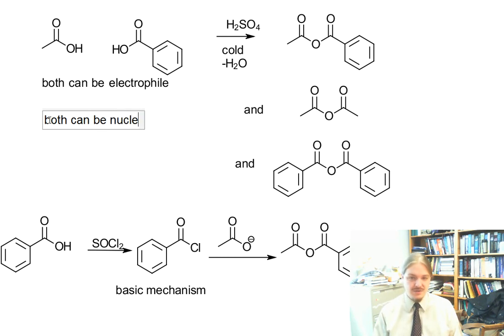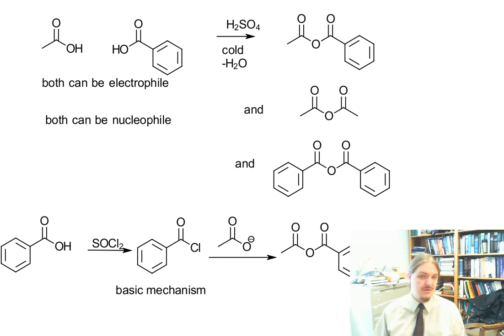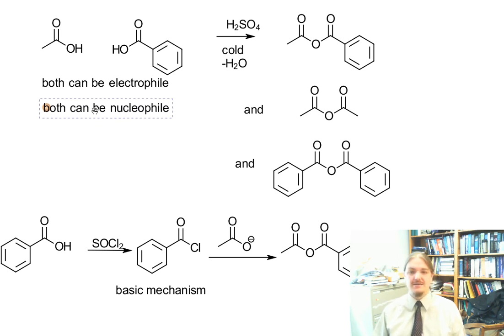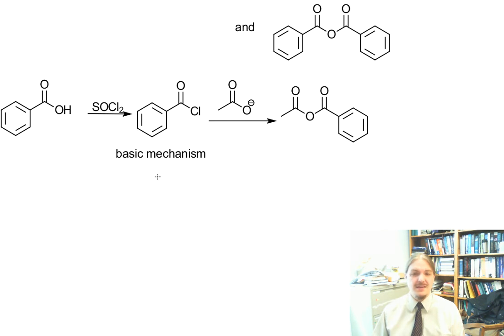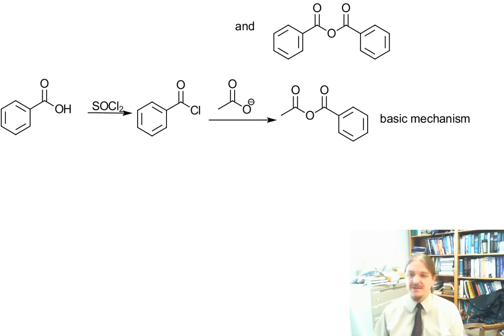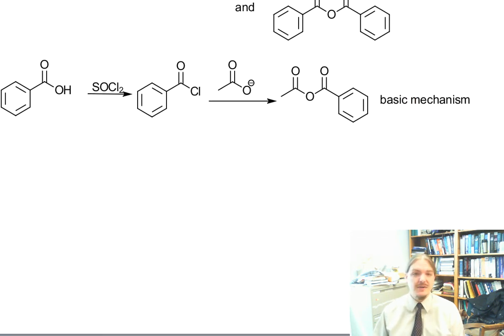But in this case, there is no such guarantee. Both can be the electrophile and both can be the nucleophile. And that's trouble. In this version here, where this reaction follows the basic mechanism, the acid chloride is an electrophile only. And we've made the carboxylate anion something that's a nucleophile only.